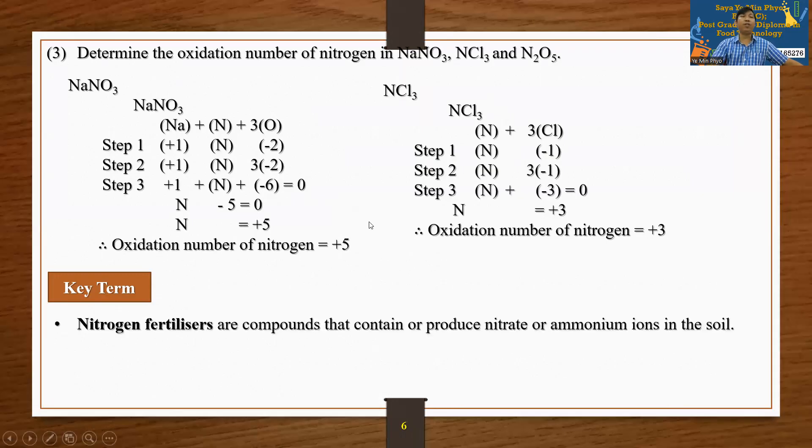Key term: Nitrogen fertilizers are compounds that contain or produce nitrate or ammonium ions in the soil. That's why we're going to cover the relevant chemistry in this chapter. See you in the next video.